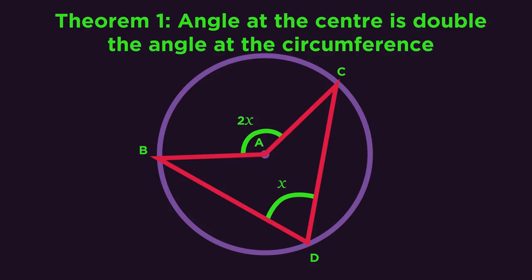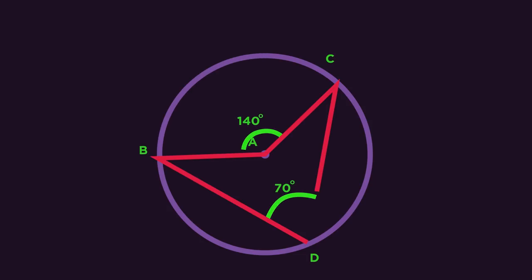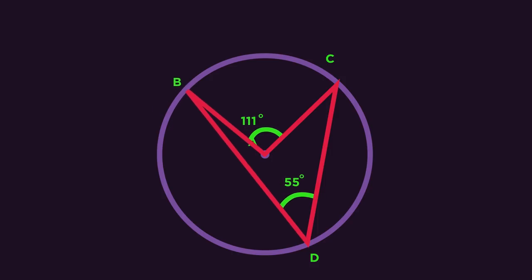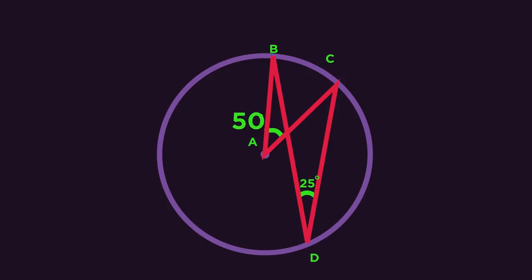Sometimes this theorem can be a little disguised. See what happens when I move point B around. So if you see this sort of setup, remember that the angle at the center is double the angle at the circumference, even if it doesn't have the normal arrowhead shape.